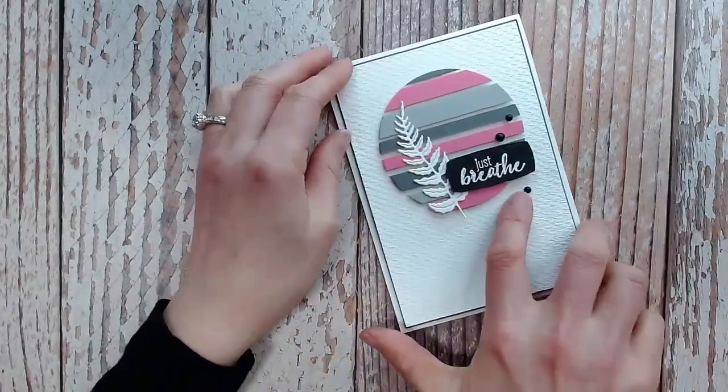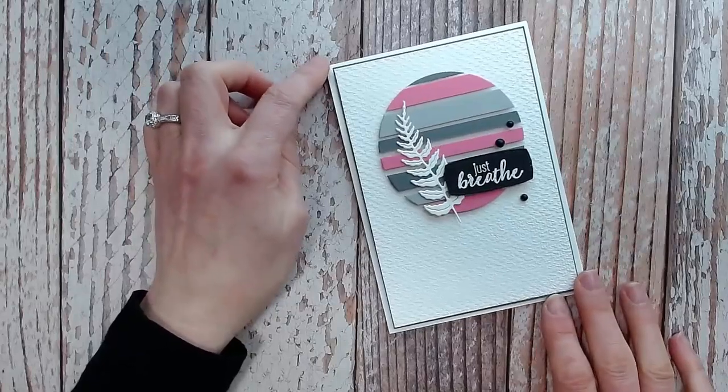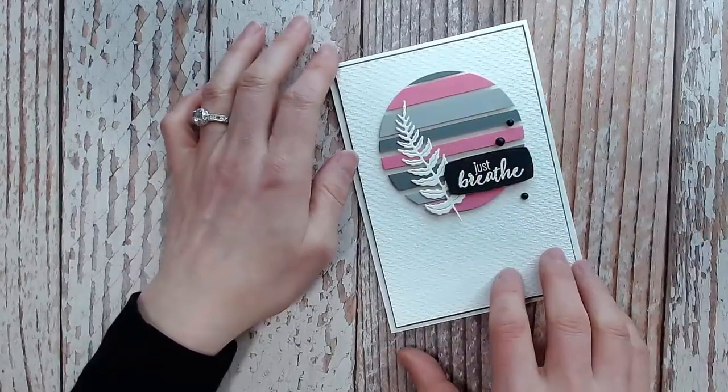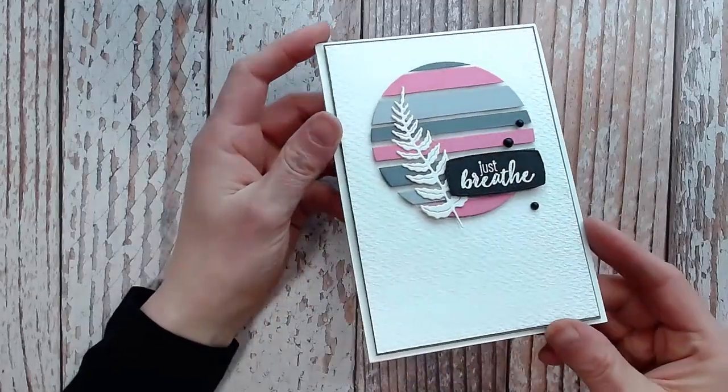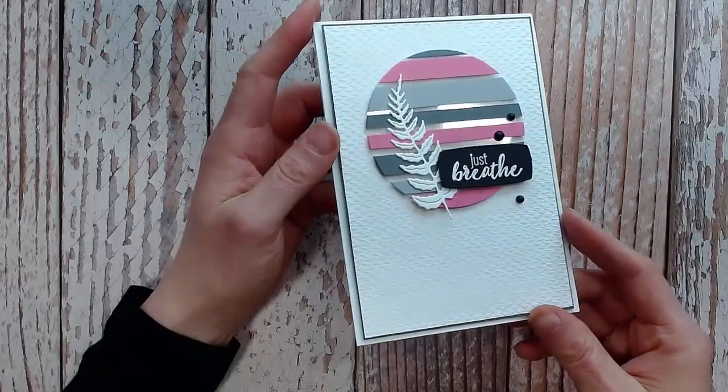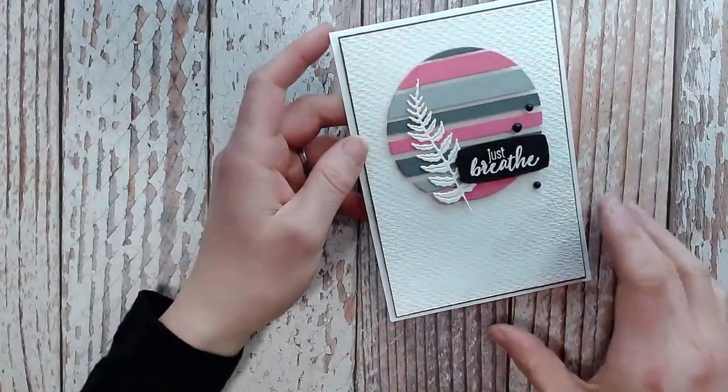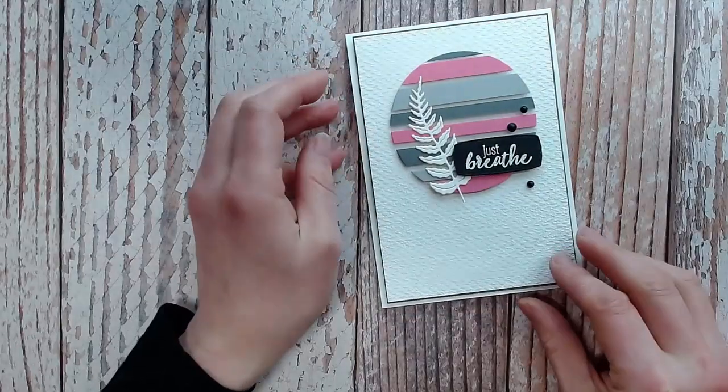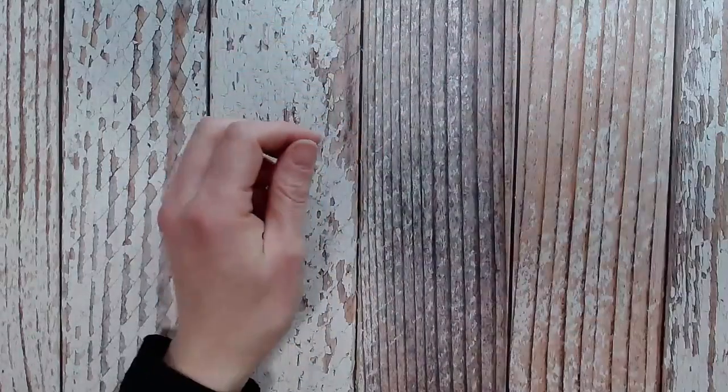Okay, so this is what is called the floating strip technique. Hopefully you can see that these little strips of paper in the background are actually up off of the card on dimensionals in a perfectly circular shape. I will show you how that's done and then I'll show you some more samples.